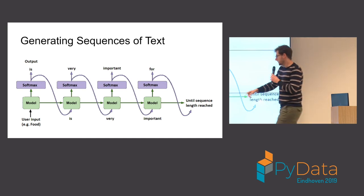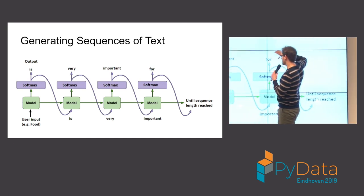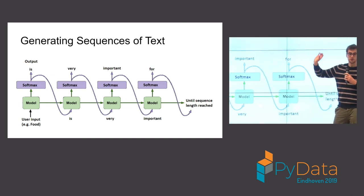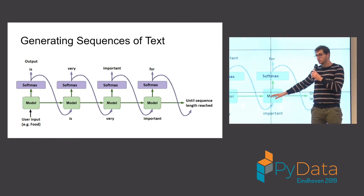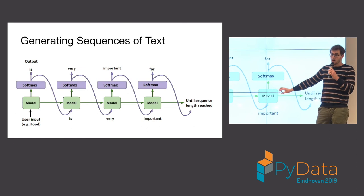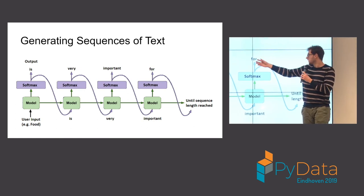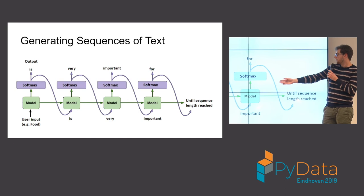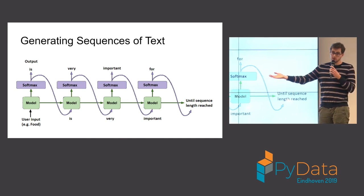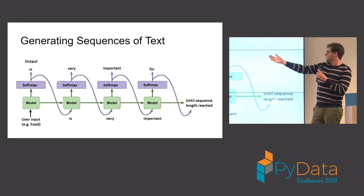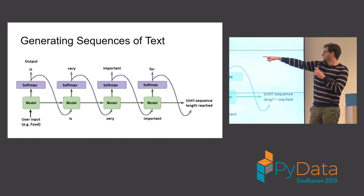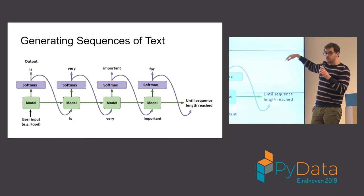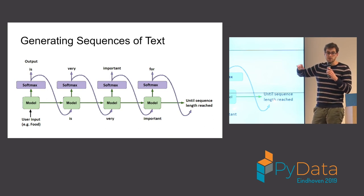The sampled word then becomes the input to the next time step, and the same process repeats. For example, a user input of 'food' causes the model to generate 'is', then 'is' becomes input and 'very' is generated, and so on, building a sentence or multiple sentences depending on how long you want the sequence to be.